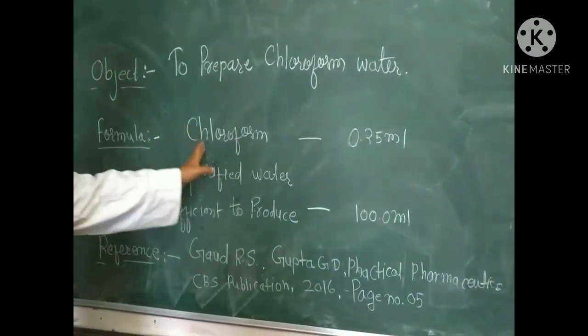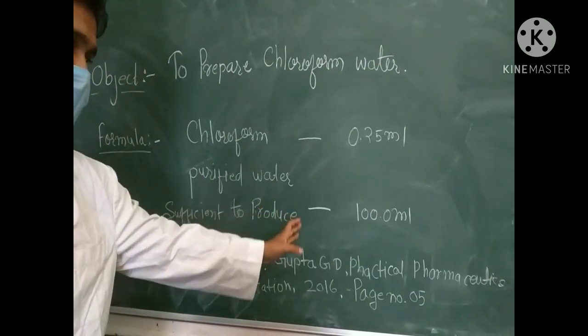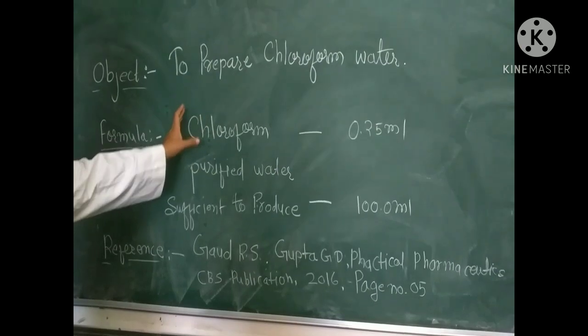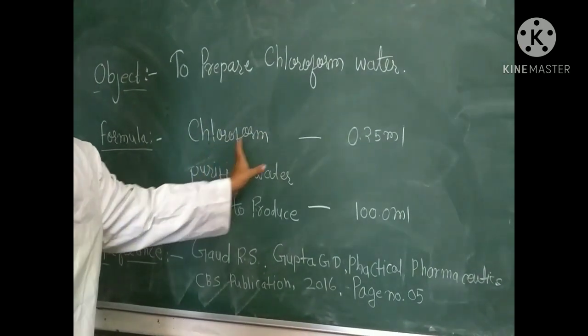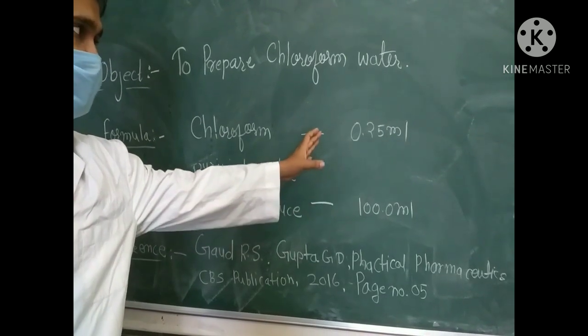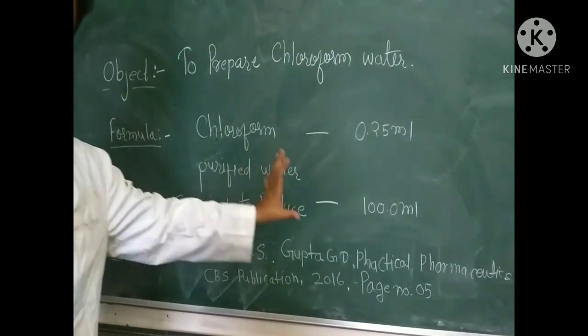For the given formula, chloroform is 0.25 ml and purified water sufficient to produce 100 ml. If you want to make double strength chloroform water, the quantity of chloroform will be double, that will be 0.50 ml, and purified water quantity will be the same.